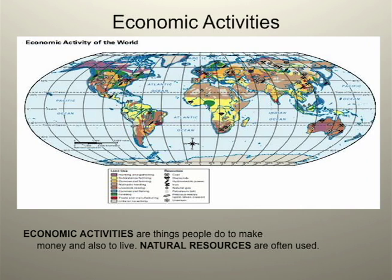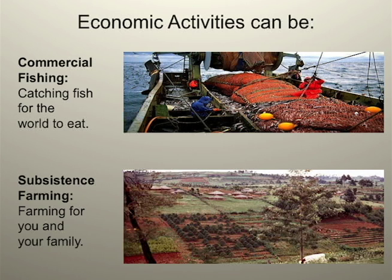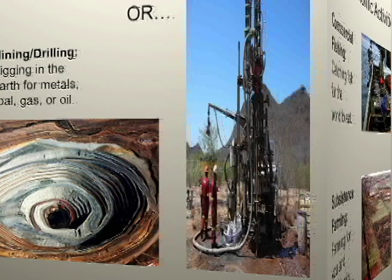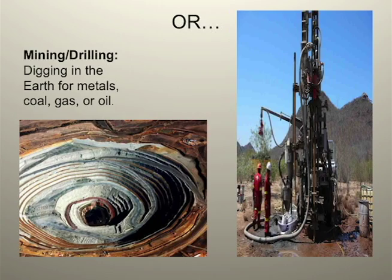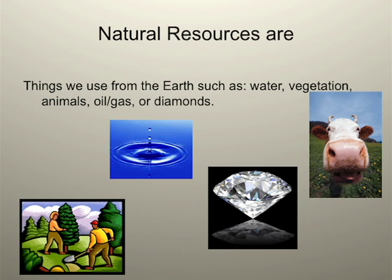This map shows economic activities. Economic activities are what people do to make money and live. People often use natural resources — things that come from the earth — in everyday use. Here you can see two main types of economic activities. Commercial activities provide goods and services for many, many people. Subsistence activities provide goods and services at a family or local level. We can also take things from inside the earth, such as metal, coal, oil, or gas. These are a few examples of natural resources, which can be plants, animals, water, or even diamonds. Which ones would you like to have during a zombie invasion?